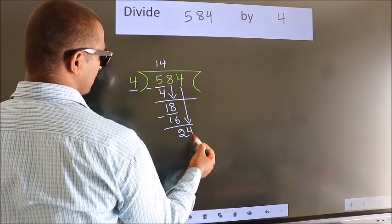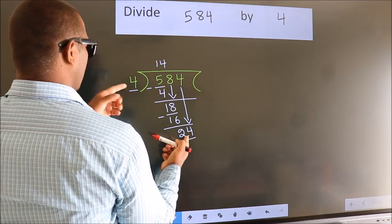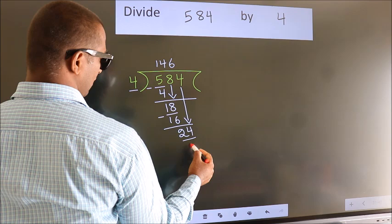So, 4 down. So, 24. When do we get 24? In 4 table, 4, 6, 24.